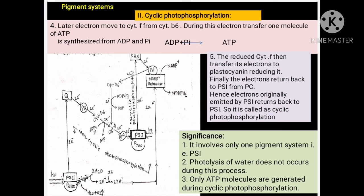The significance of cyclic photophosphorylation: first, it involves only one pigment system, that is photosystem first. Second, photolysis of water does not occur during this process. Third, only ATP molecules are generated during cyclic photophosphorylation. Thank you.